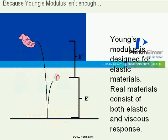Now, the problem is in the real world, most materials aren't purely Newtonian and aren't purely Hookean. Polymers especially are viscoelastic materials, and they're a little bit different. So if we drop a ball, for an example, the ball will bounce back a certain amount.